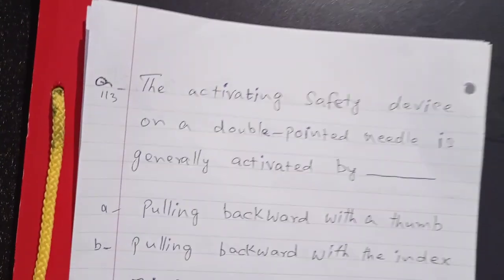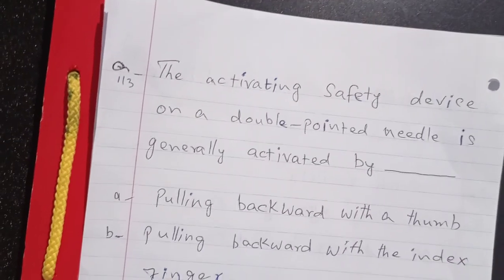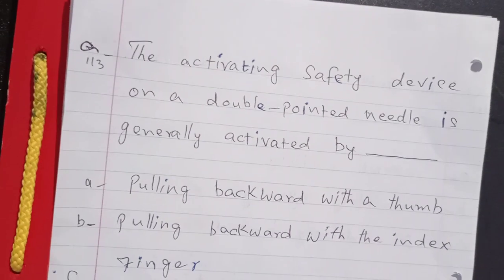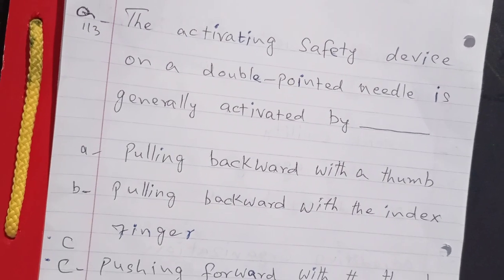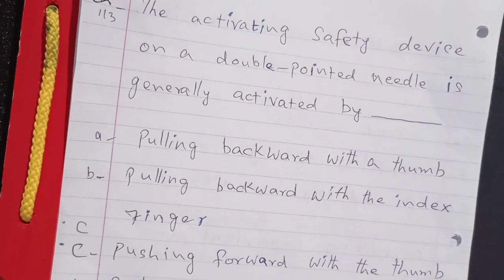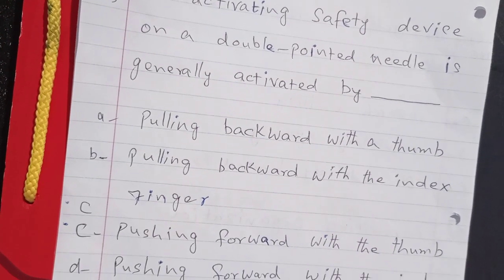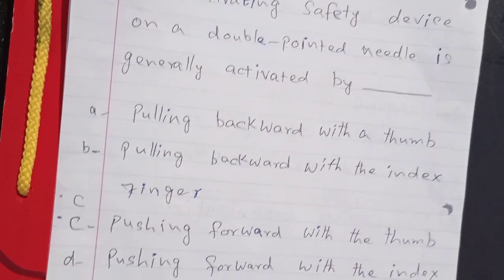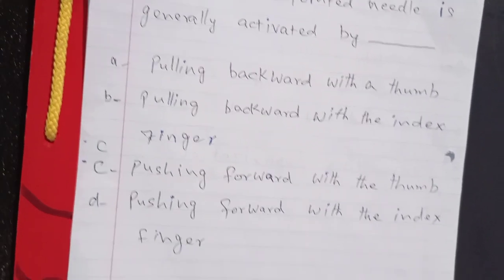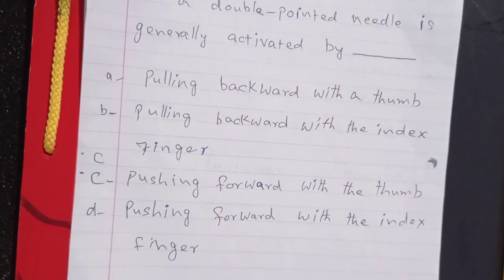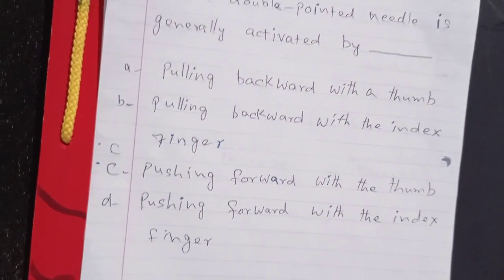Good morning, this is Dr. Tarek with some more questions about phlebotomy. The activating safety device on a double-pointed needle is generally activated by: pulling backward with the thumb, pulling backward with the index finger, pushing forward with the thumb, pushing forward with the index finger. The answer is C: pushing forward with the thumb.